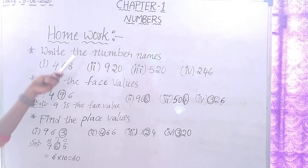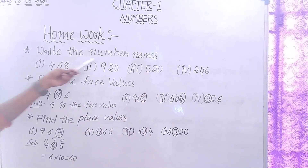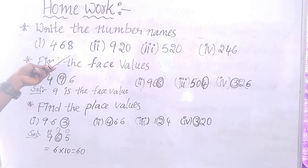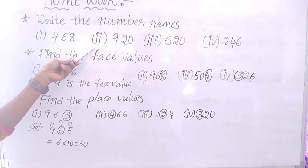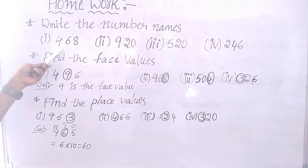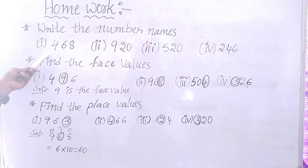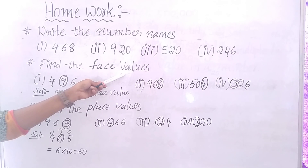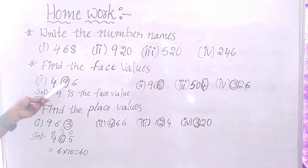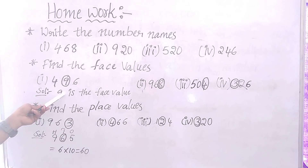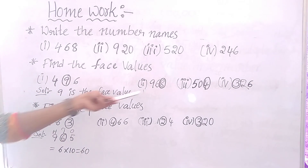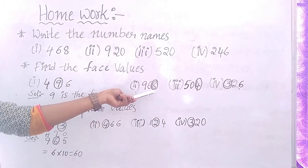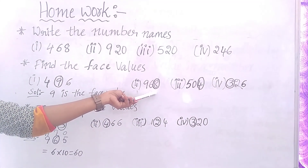Okay students, take homework. Write the number names — write the number name of these numbers in word form. For example, 468. Like that, write all the questions. Next, find the face values. Here 4, 9, 6 — which number is circled? That is the face value. Which number is circled? That is the face value. Here which number is circled? 8 — 8 is the face value of this number.